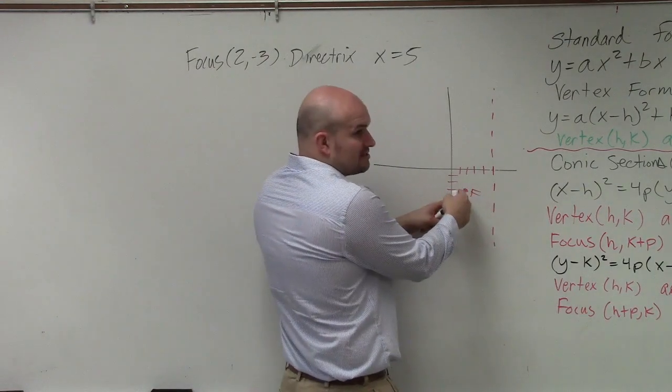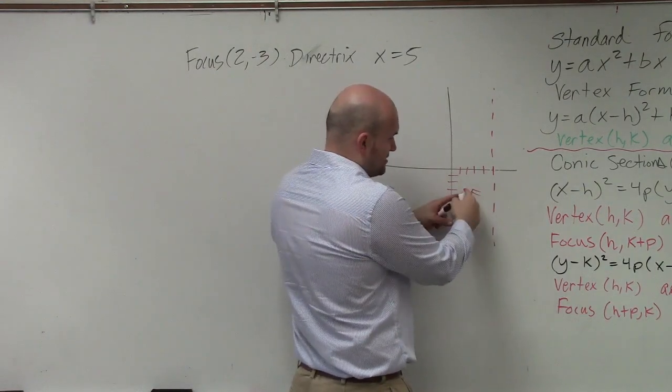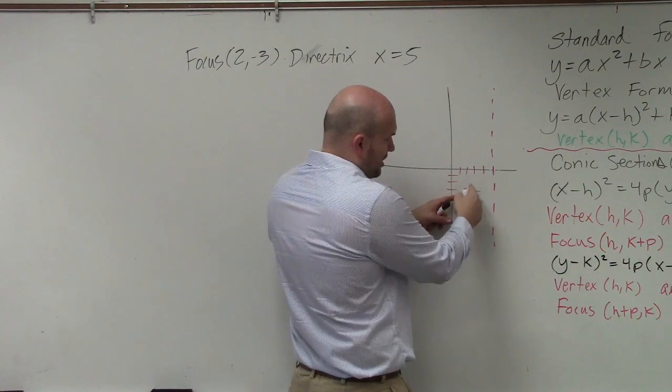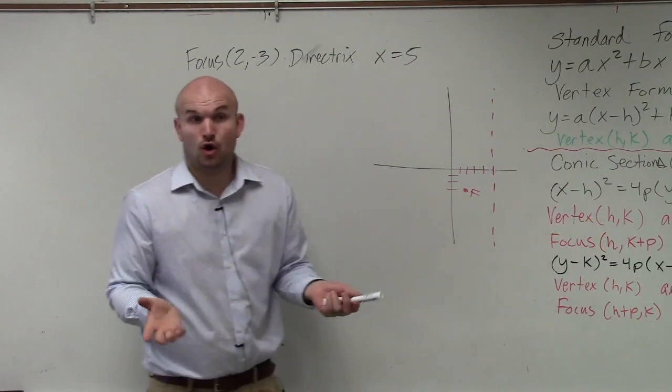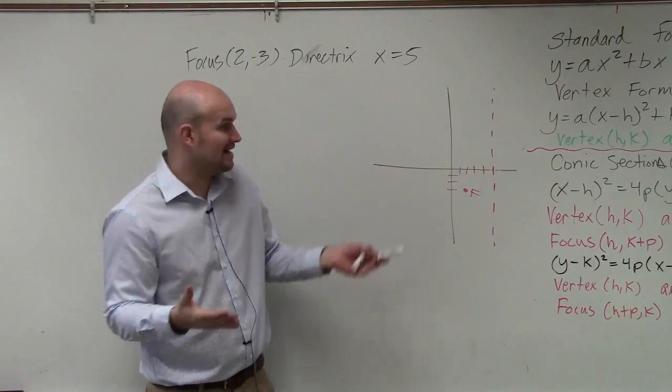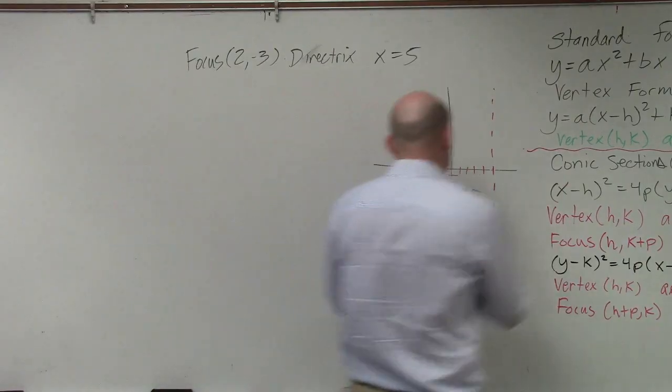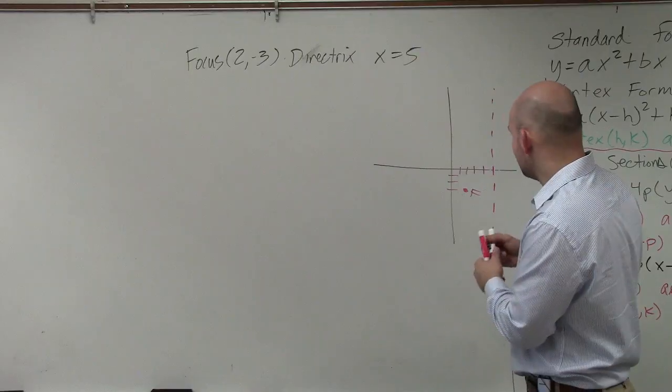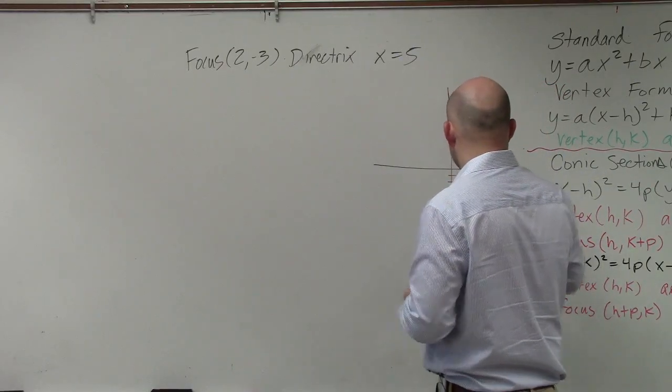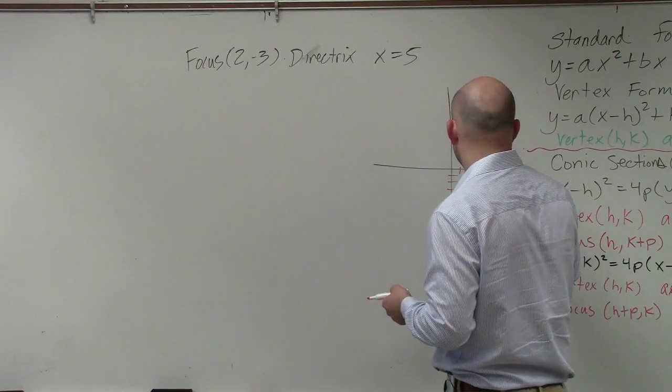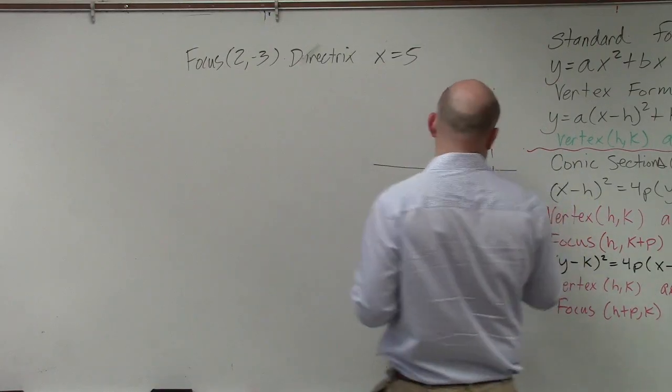So if here's my focus and then here's my vertex, the distance between them is one, two, three. Right? So I need to go over 1.5 to find my vertex. So if I'm at two, my vertex is now going to be at 3.5.